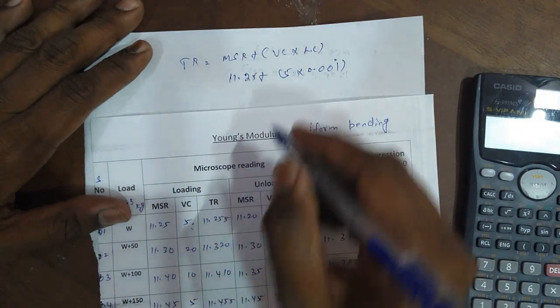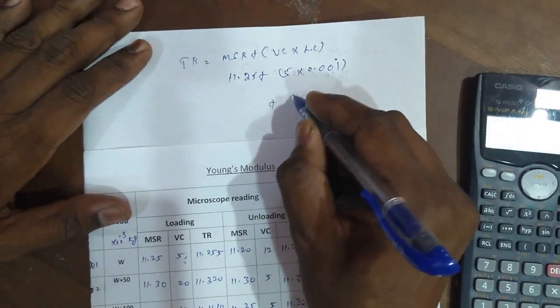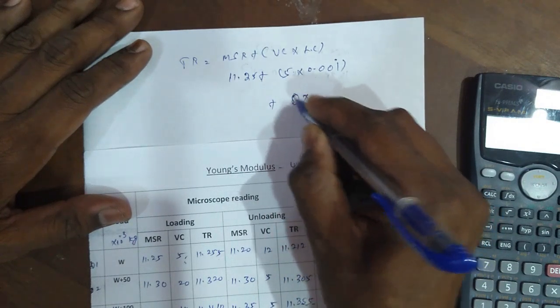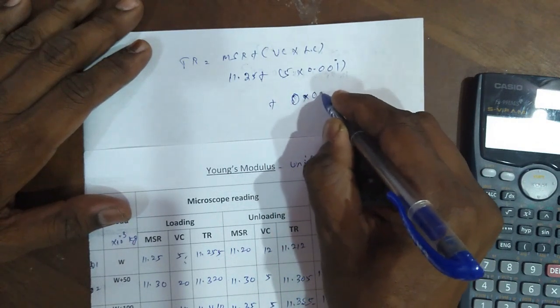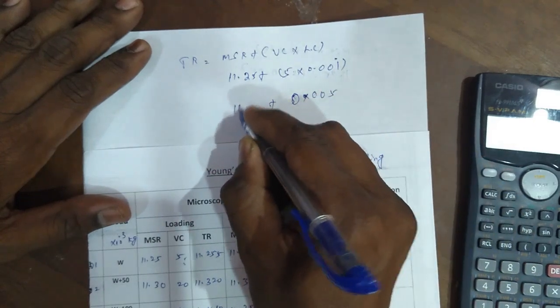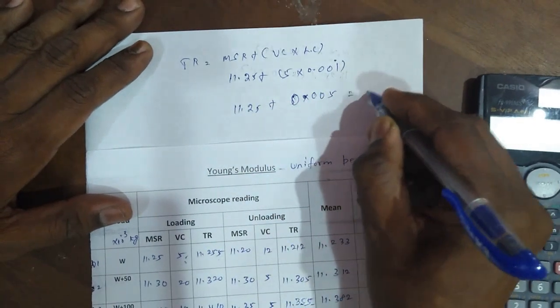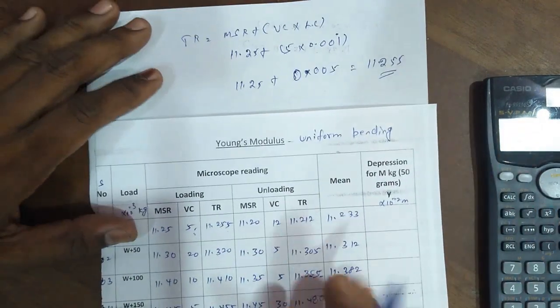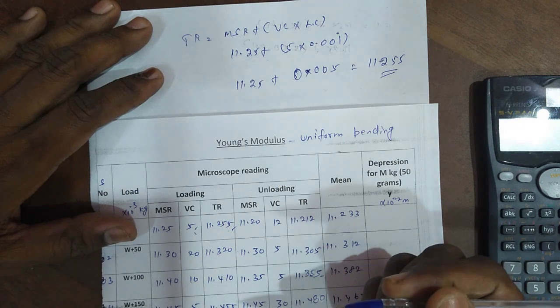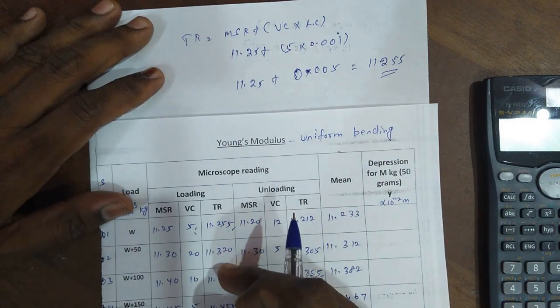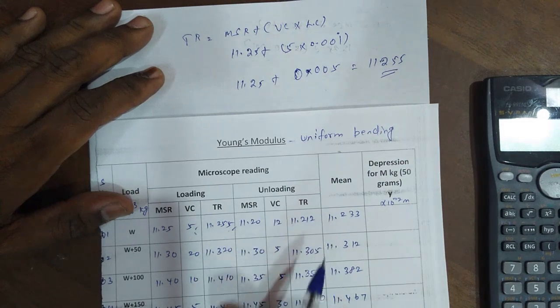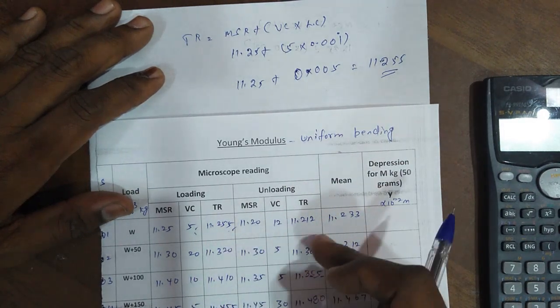So the answer is 5 into 0.005 plus 11.25. The answer is 11.255 centimeters. Like that, the total reading calculation. The same method is used to find the total readings for loading value and unloading values.